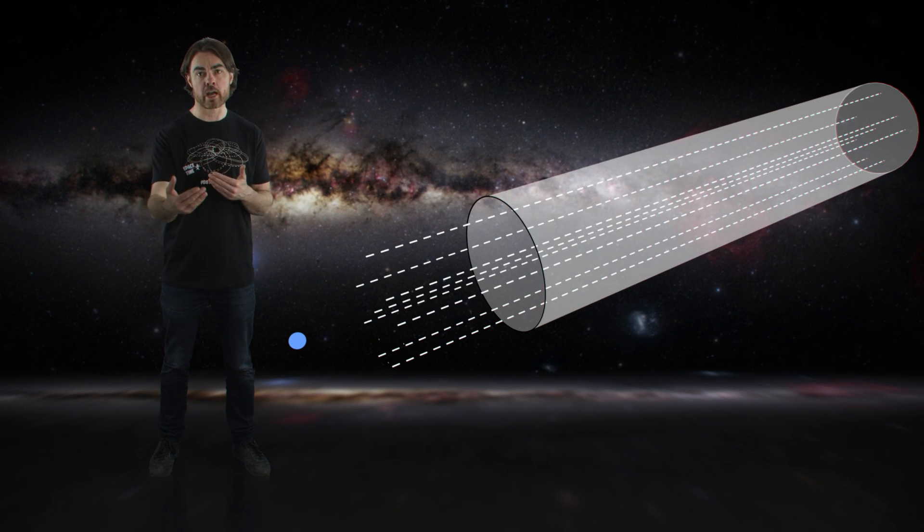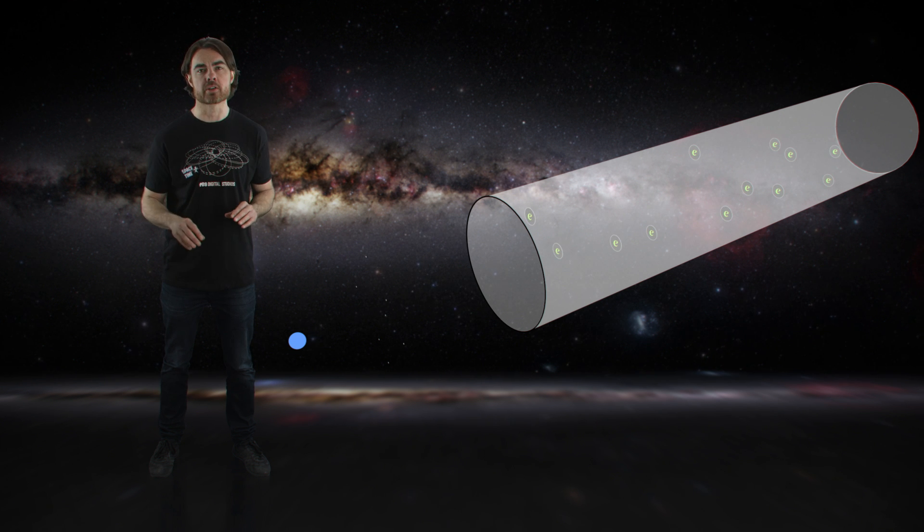So how far would a photon have to travel before bumping into one of these electrons? Think of each electron as a target with a radius equal to its scattering cross-section. Now, imagine the photon is able to look ahead and see all of its possible paths along a column. That column is filled with targets.